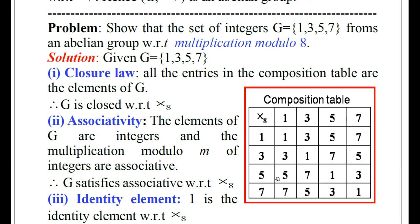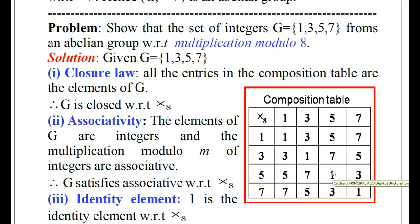Consider the third row headed by element 5. 5×1=5. 5×3=15: when 15 is divided by 8, remainder is 7. 5×5=25: when 25 is divided by 8, remainder is 1. 5×7=35: when 35 is divided by 8, remainder is 3. The last row headed by 7: 7×1=7. 7×3=21: when 21 is divided by 8, remainder is 5. 7×5=35: when 35 is divided by 8, remainder is 3. 7×7=49: when 49 is divided by 8, remainder is 1.